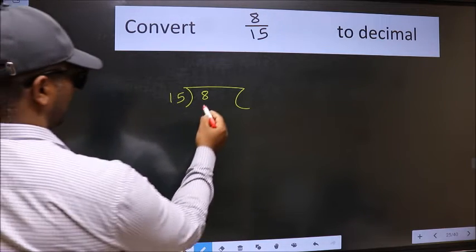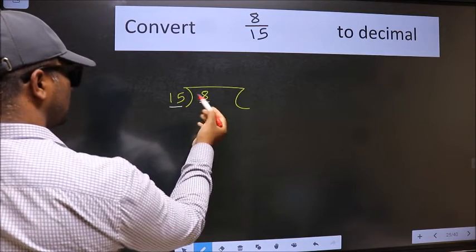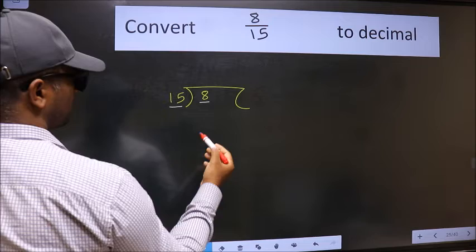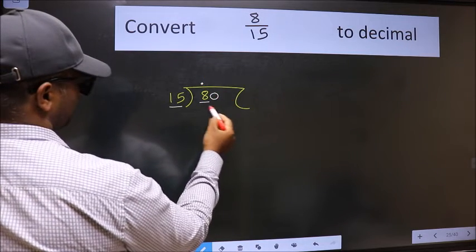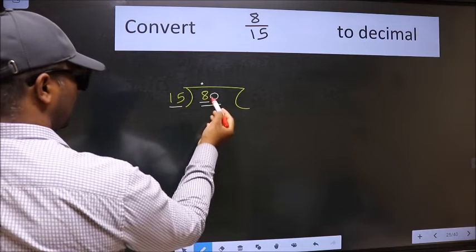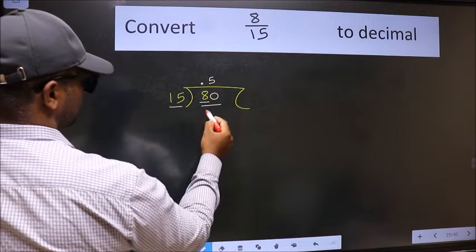Next, here we have 8 and here 15. 8 is smaller than 15. So what we should do is put dot and take 0. So, 80. A number close to 80 in 15 table is 15, 5, 75.